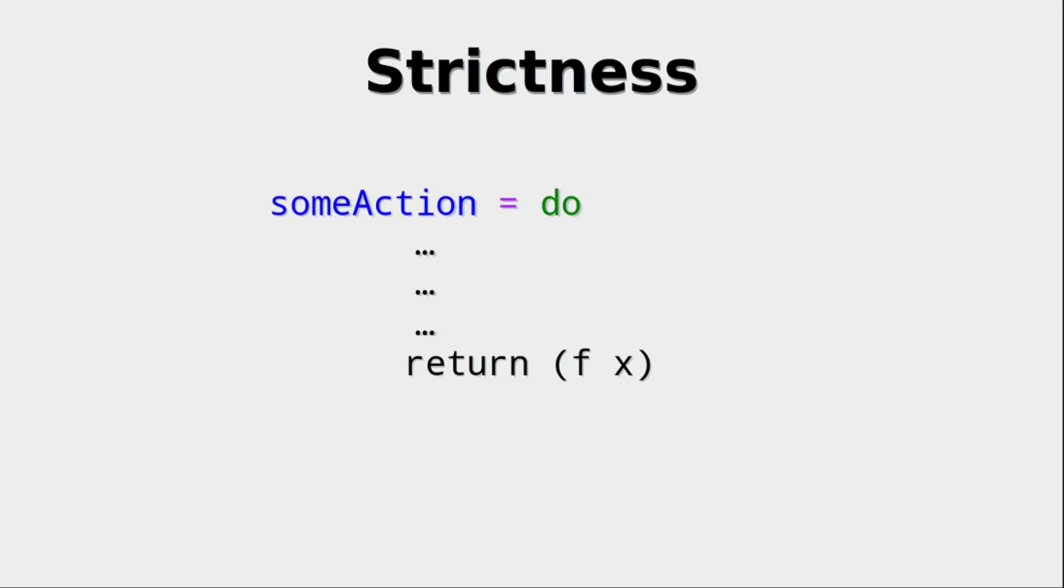Where is this helpful? Well, when we create IO actions, we basically never want to return a lazy value, because it really doesn't make any sense. Since semantically, what we try to do is that when we have actions or monads in general, we want the computation to be over once we return from the monad.